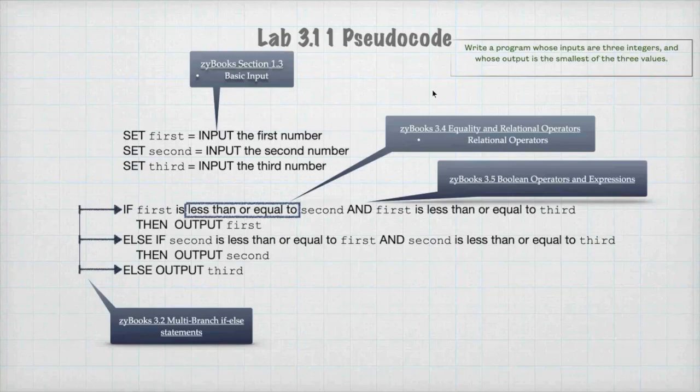If that evaluates to false, we then go to the elif statement, which is going to check second, and it's going to check second against first and second against third. If second is less than first, and second is less than or equal to third, then second is the largest number. Otherwise, third has to be the largest number. This is a relatively small program, but it requires the understanding of Boolean operators.